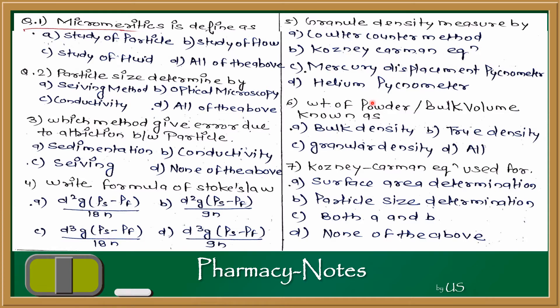Question 6: Weight of powder upon bulk volume is known as? Options are bulk density, true density, granular density, and all of the above. Bulk density is mass upon bulk volume; true density is mass upon true volume; granule density is mass upon granule volume. The answer is A — bulk density.